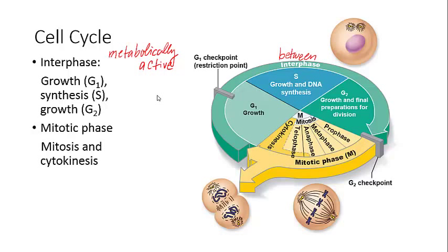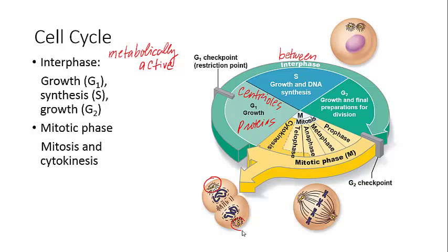The G1 phase is when there are lots of proteins synthesized. It's also the most variable time period, ranging from several minutes to several hours in different cells. One of the most important things that happens at the end of G1 is that centrioles are created. The centrioles are very important for directing the division of the DNA — for directing mitosis. Remember, one centrosome is made up of two centrioles.